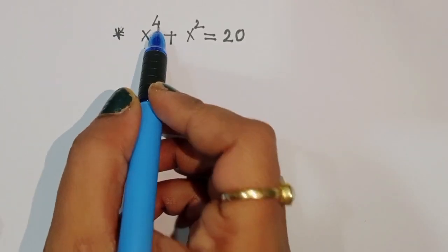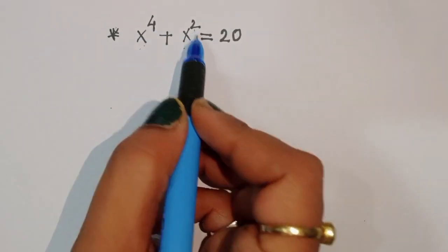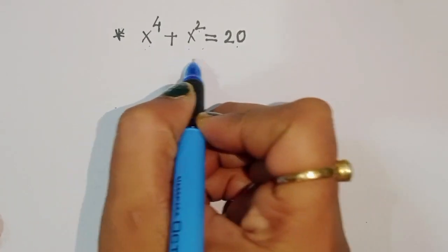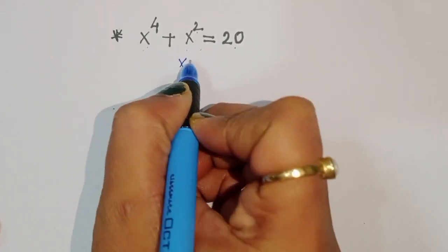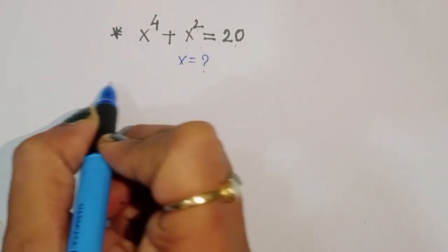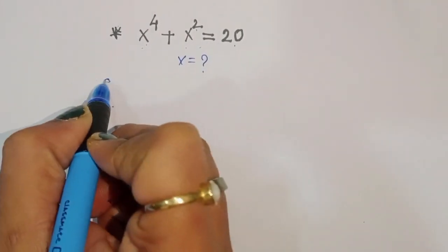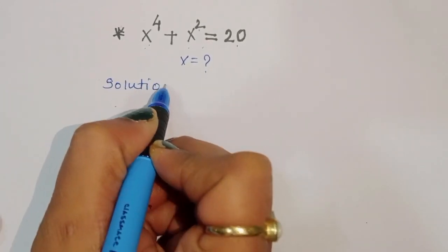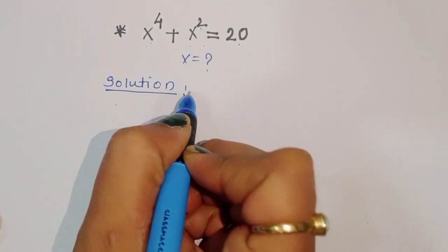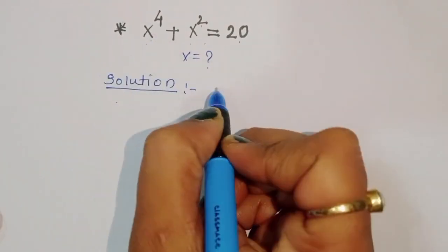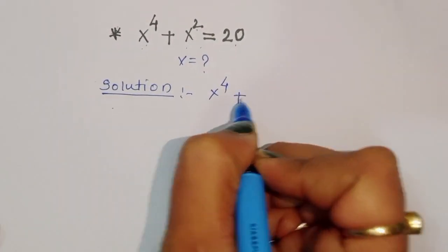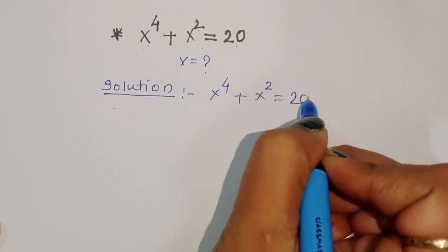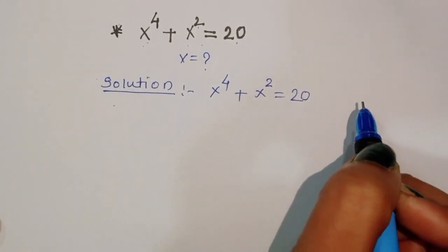Given x power 4 plus x square is equal to 20, we have to find out the value of x. Let's see the solution.